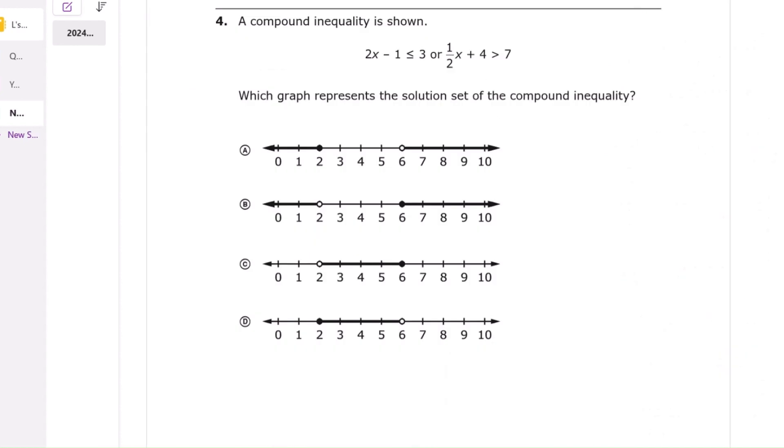Question 4. We are graphing the compound inequality. Step 1: Solve the first inequality 2x minus 1 is less than or equal to 3. That gives 2x is less than or equal to 4. Divide both sides by 2. That gives x is less than or equal to 2.